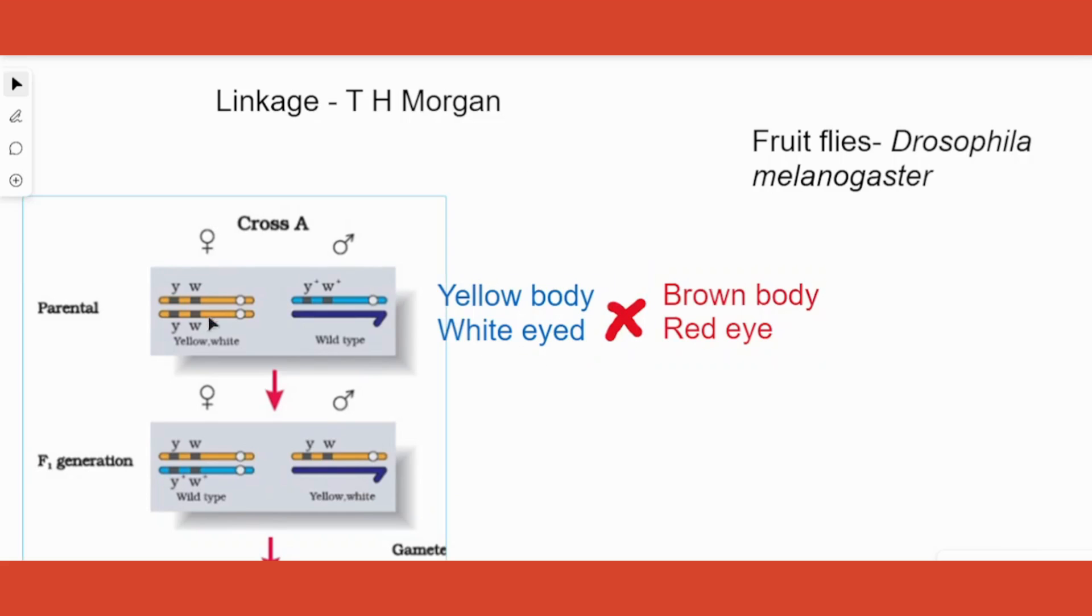He knew that these genes responsible for body color and eye color were found on the X chromosome. Females have two X chromosomes and males have only one X chromosome. That's exactly why these genes are represented on these lines - these lines represent the X chromosome. Here two of them because it's a female, and here one X chromosome because it's a male. The other Y chromosome is represented, however no genes are shown on it.